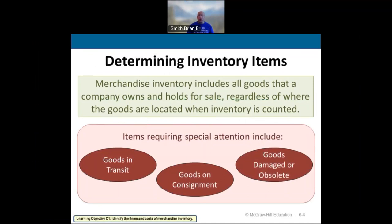Our inventory is anything that we currently own. It doesn't necessarily mean we have it in our physical possession. We have to identify any items that we own. That includes goods in transit that are FOB shipping point — so when we purchase something FOB shipping point, we include it in our inventory. Also goods in transit for anything we sold that was FOB destination: if ownership doesn't transfer until the customer receives it, we include those as well.